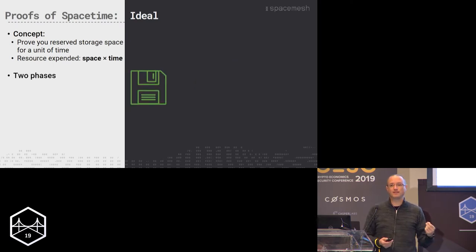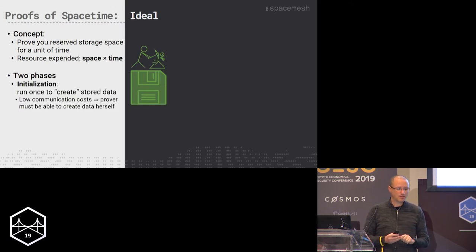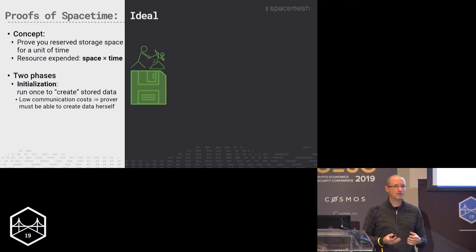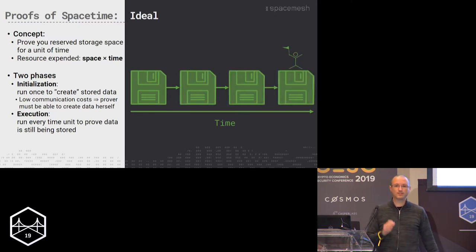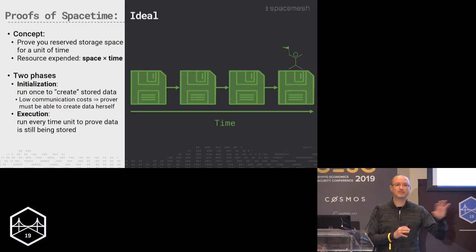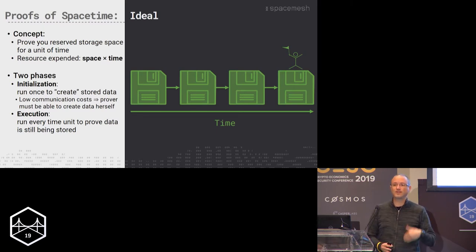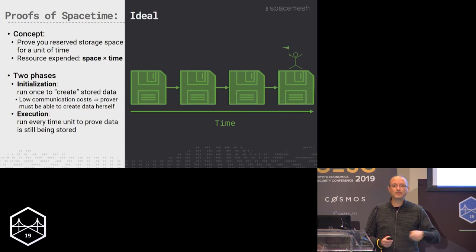To do this, you need two phases. In the first phase, you do some initialization. Why do we need initialization? Because we don't want a lot of communication — we want you to be able to create the data yourself. You have a two-terabyte disk; we don't want you to download two terabytes. You just run something to fill your disk with two terabytes. Then we have an execution phase. The init phase fills your disk with data — in our case, the data is junk, just meant to prevent Sybil attacks. But you filled your disk. And in the execution phase, something that repeats every once in a while, you prove that you're still storing this data.